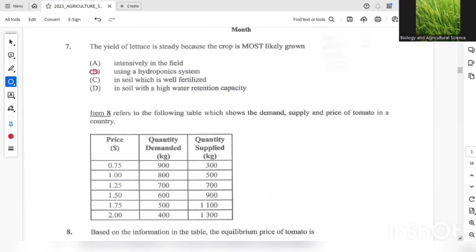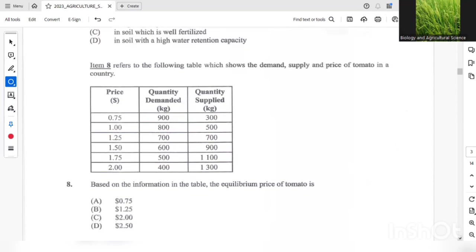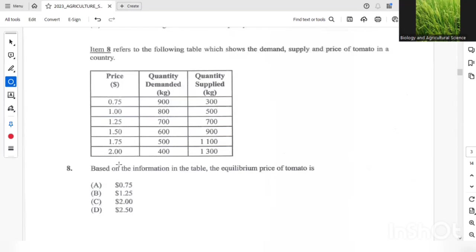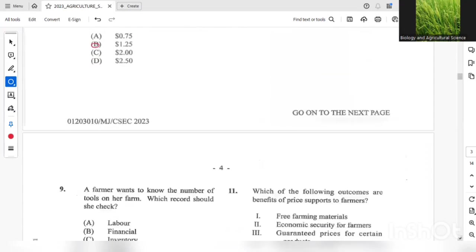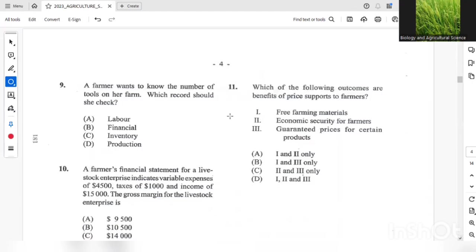Question 8 refers to the table, which shows the demand supply and price of tomato in a country. So the question is based on information on the table, the equilibrium price of tomato is - and the equilibrium price would be the price where the demand and the supply will be the same. So the answer should be B. Question 9, a farmer wants to know the number of tools on her farm. So which record should she look at? Tools will be in the inventory.